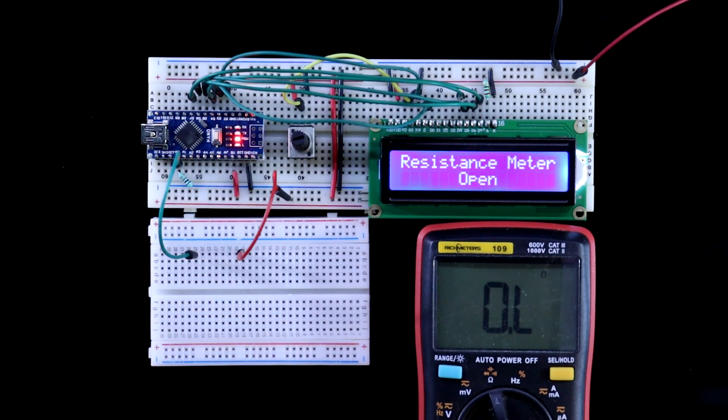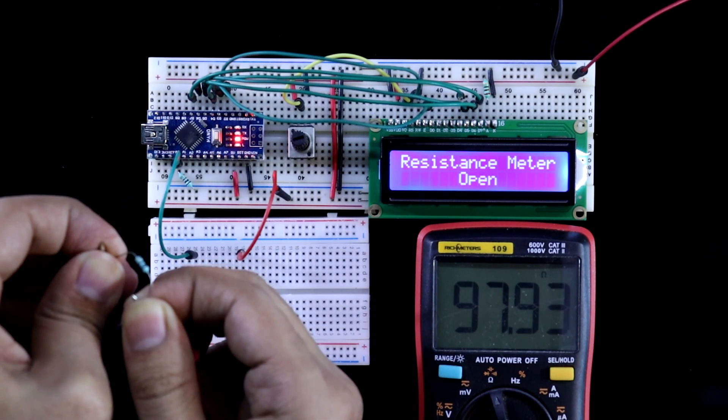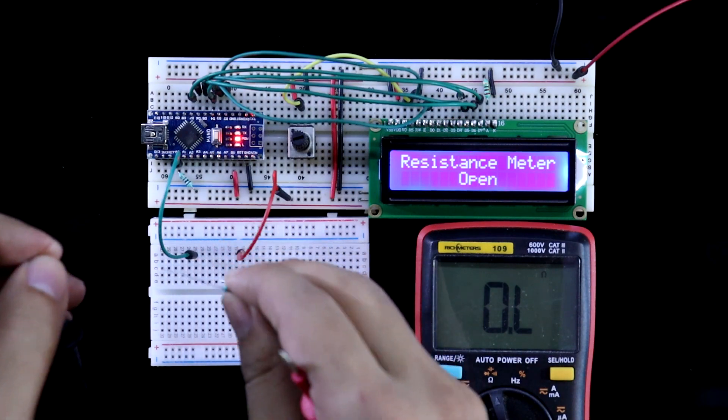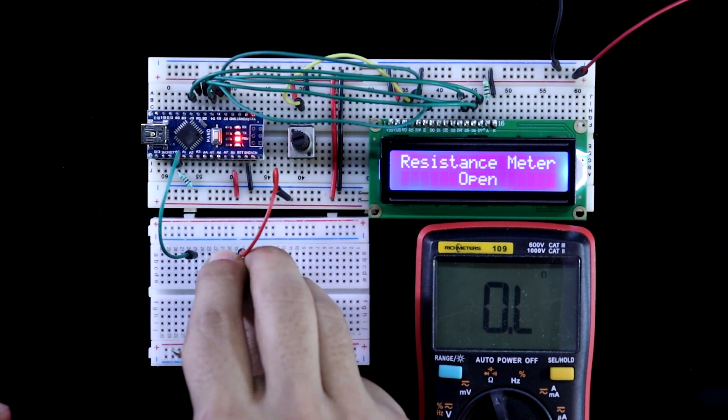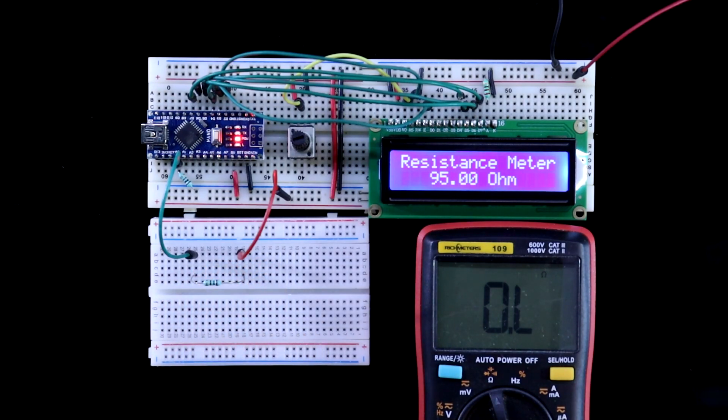Now I will test a higher value resistance. 100 ohms resistor and it is showing 97.93. If I measure this, it is 96.12 or 95. It is also under 5% accuracy.